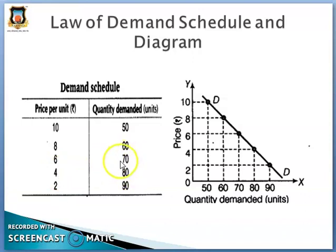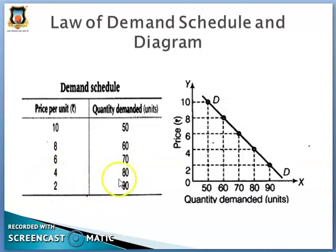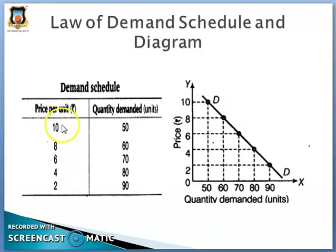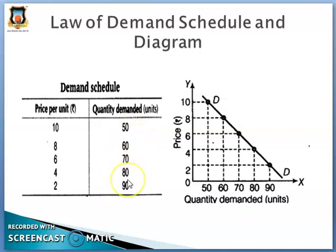As price decreases further from 4 rupees to 2 rupees, quantity demanded increases from 80 units to 90 units. So we can see here that as the price decreases from 10 to 8, 8 to 6, 6 to 4, and 4 to 2 rupees, quantity demanded increases from 50 to 60 to 70 to 80 to 90 units. As price decreases, quantity demanded increases.